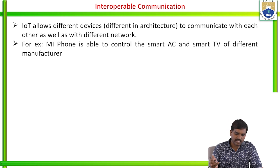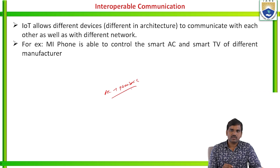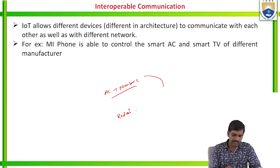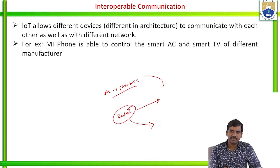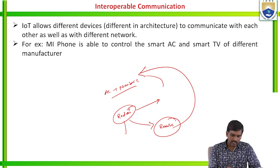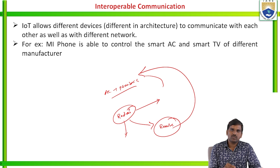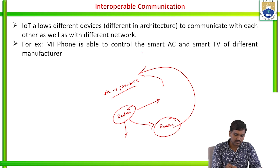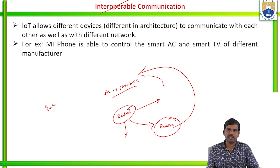Here the example is the AC remote: a Panasonic AC is available, and with the help of a MI remote application we can operate the Panasonic AC. MI is a different company and Panasonic is a different company, yet we can use a different remote for different companies. This is possible only through interoperable communication — that is the example of interoperable communication.